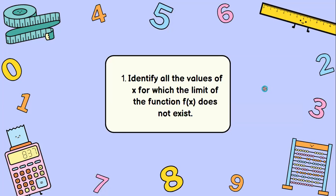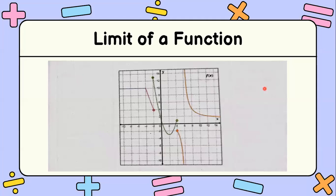The first question aims to identify all the values of x for which the limit of the function f does not exist. As we can see in the given graph, we have multiple functions graphed in a single plane. We have the red one, the green one, the orange one, and the yellow one. Let us first study this graph.